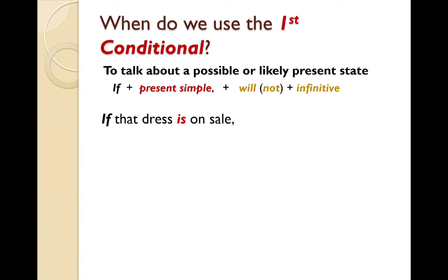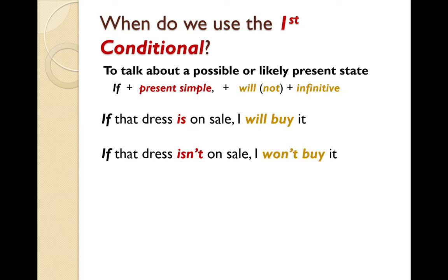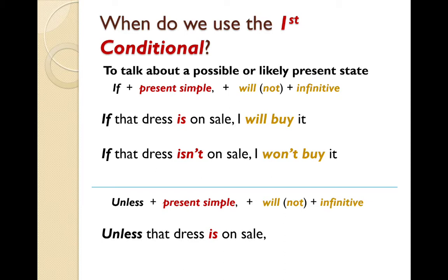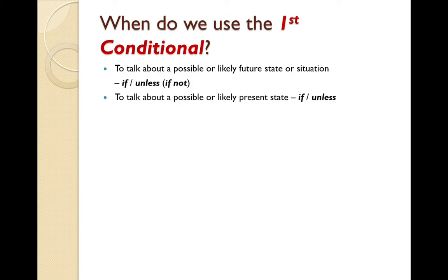Let's have one more. If that dress is on sale, I will buy it. If that dress isn't on sale, I won't buy it. And unless that dress is on sale, I won't buy it. So again, 'if that dress isn't on sale' and 'unless that dress is on sale' have the same meaning. So 'unless' is like saying 'if not'.